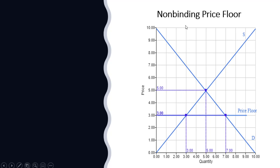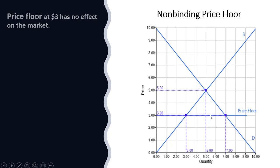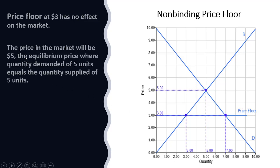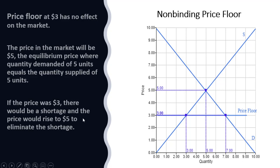For a non-binding price floor, that will be the case anytime the price floor is set below the equilibrium price. At a price floor of three dollars, this will have no effect on the market. It is perfectly legal to have a price above the price floor — the price floor just sets a minimum price. So the price here will be five dollars with the equilibrium quantity of five — neither surplus nor shortage. The equilibrium price where the quantity demanded of five units equals the quantity supplied of five units. If the price was three dollars there would be a shortage, and that would be eliminated through a rising price; the price can rise above a price floor.